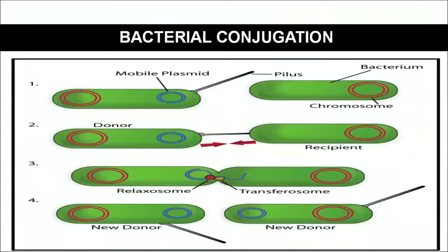The third method is transduction, which can be explained through the Hershey and Chase experiment. When bacteriophage infects bacteria, viruses use the host machinery to make their own copies, integrating into the main genome of the bacteria. While making copies, some part of the bacterial genome gets attached to the virus genome. When this virus breaks the bacterial cell and infects another bacterium, the genome from the first bacterium gets transferred to the next — this is known as transduction.